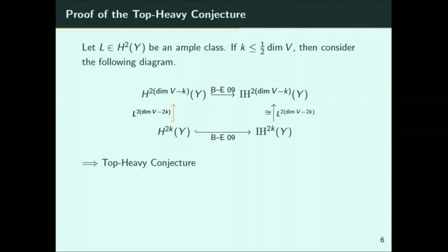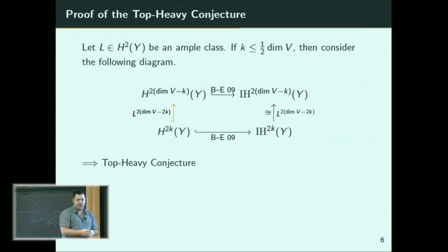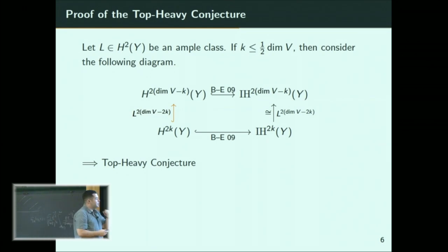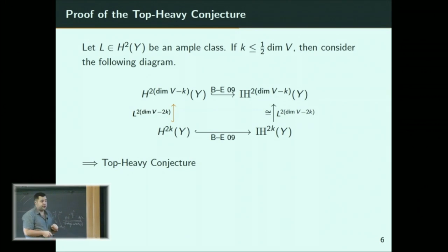What are we thinking about now? There's a generalization of linear algebra called matroid theory. But when you have an arbitrary matroid, you don't have hyperplane arrangements and you don't have vectors in a vector space — so I can't build this variety. So how can I prove the top-heavy conjecture for all matroids when I don't have geometry?